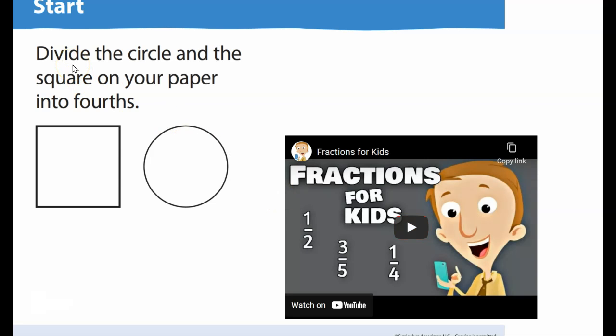So somewhere in your book, you have these two shapes, right? It says divide the circle and the square on your paper into fourths.